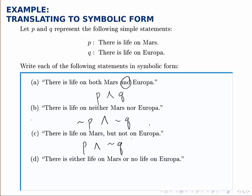For part D, notice that the connector we're going to be using is OR. So that's the downward pointed wedge or a V. And we're told either there is life on Mars. So either P or there is no life on Europa. So P or not Q.